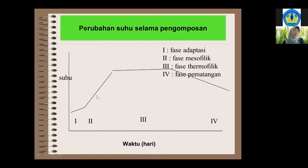Fase dua adalah fase mesofilik. Di sini organisme sudah mulai mendegradasi bahan-bahan organik yang paling mudah yang ada di dalam tumpukan. Karena reaksinya eksotermis atau menghasilkan panas — biasanya bakteri hidrolitik — maka akan dihasilkan panas, sehingga pada hari kedua atau ketiga terjadi kenaikan suhu yang sangat drastis, dari suhu kamar bisa mencapai di atas 50, bahkan 60 sampai 70 derajat Celsius.